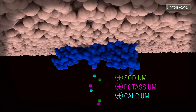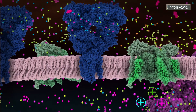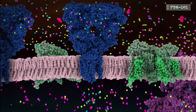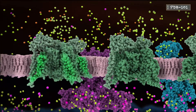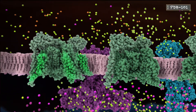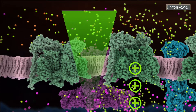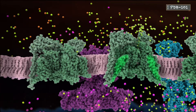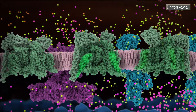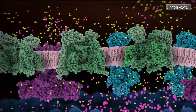Remember that influx of ions we saw earlier? It causes a change in the voltage. Voltage-gated sodium channels sense this change and open, allowing sodium ions into the neuron. These sodium ions are flowing down gradients of both concentration and charge. Their influx triggers more sodium channels to open, creating a positive feedback loop as neighboring sodium channels activate one another.